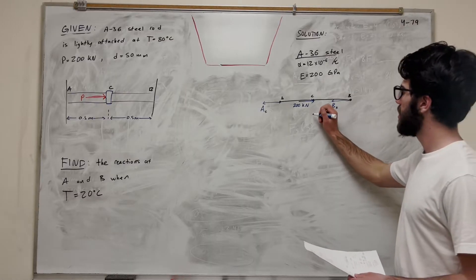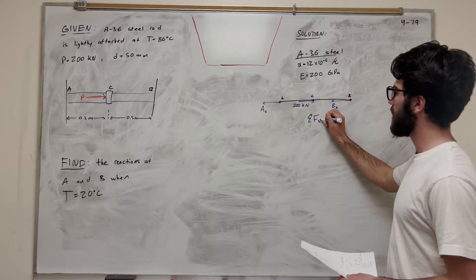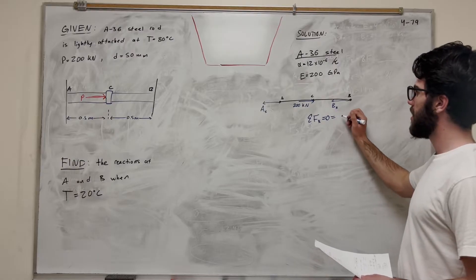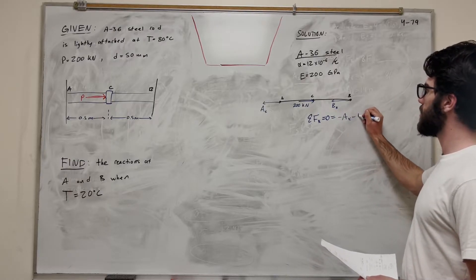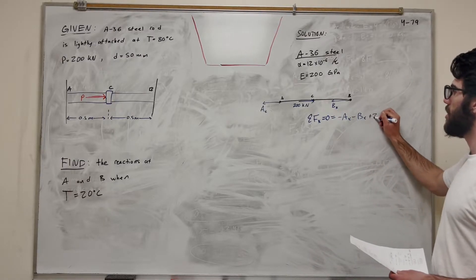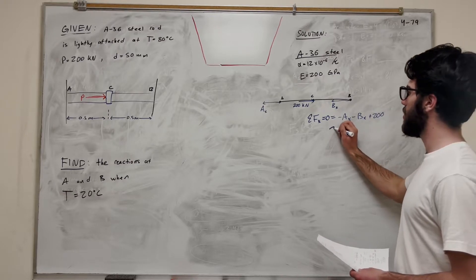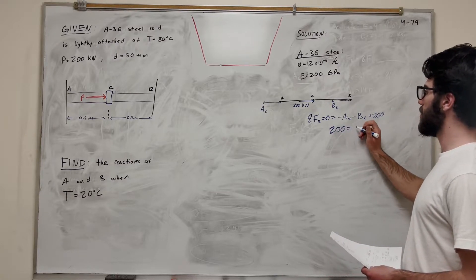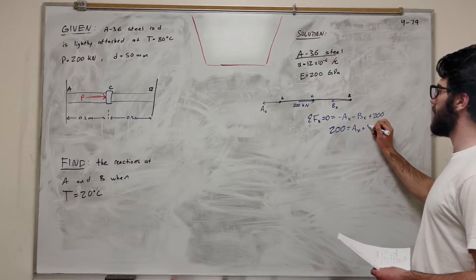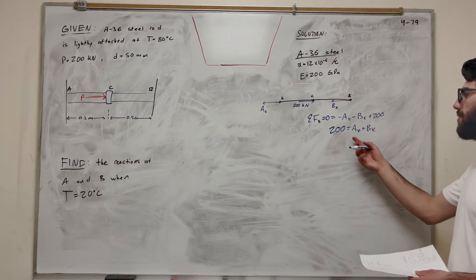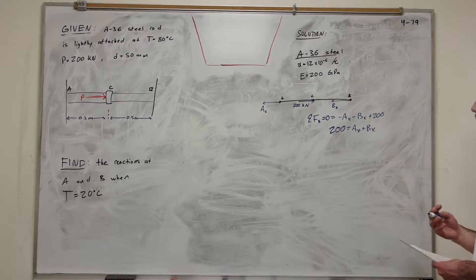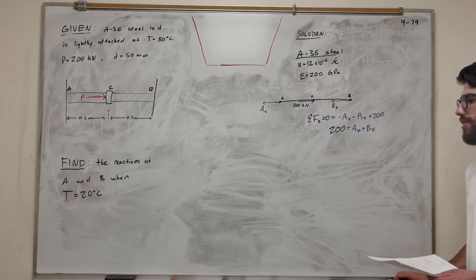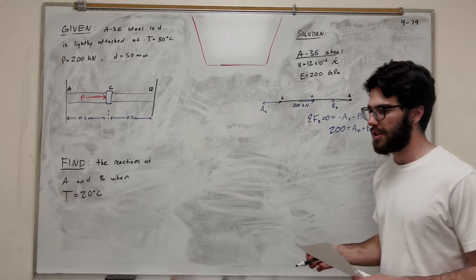Now we should do sum of the forces. Sum of the forces in the X is equal to zero. We're at equilibrium. So it's going to be minus A_X minus B_X plus 200. And basically, we're going to get that 200 is equal to A_X plus B_X. So we have two unknowns, right? We're trying to solve for A_X and B_X. So how are we going to go for this, right? Well, we need a whole new set of equations to solve for those two things.